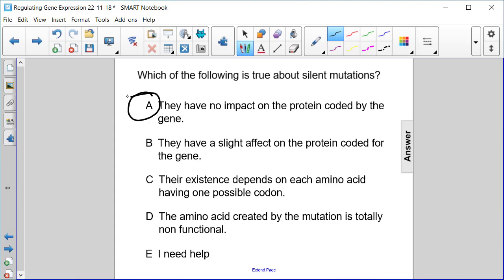This happens because we have some redundancy in our genetic code where multiple codons can code for the same amino acid. So the answer here is A.